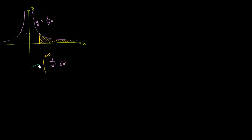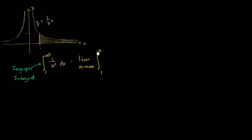This right over here is an improper integral. How do we actually deal with this? By definition, this is the same thing as the limit as n approaches infinity of the integral from 1 to n of 1 over x squared dx. This is nice, because we know how to evaluate this — it's just a definite integral where the upper boundary is n, and then we take the limit as n approaches infinity.